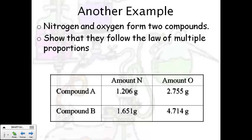Here's another example. This one says nitrogen and oxygen form two compounds. Show that they follow the law of multiple proportions. This time we're not given percentage, we're just given grams. So we're going to just simply take our second mass right here, the oxygen, gets divided by the first mass, which is the nitrogen. So this one we get 2.284.